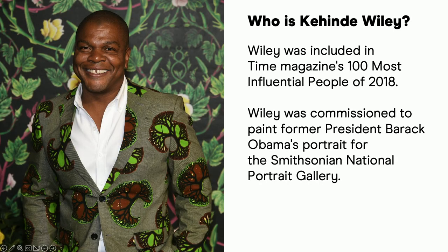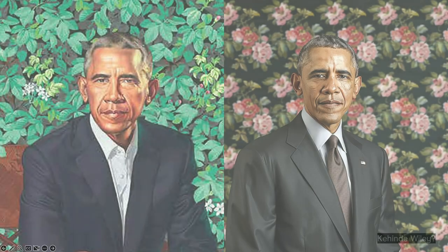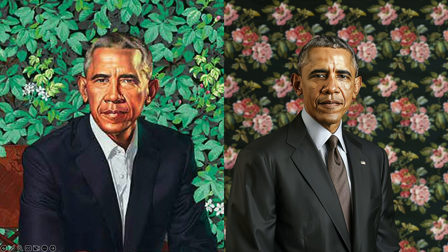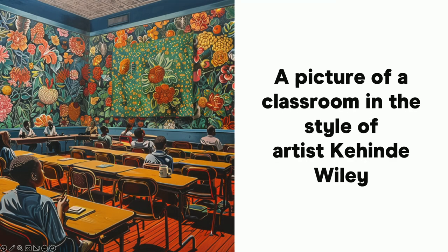This is an artist, Kehinde Wiley, who was included in Time Magazine's 100 Most Influential People of 2018. He was commissioned to paint Barack Obama's portrait in the Smithsonian National Portrait Gallery, and it was a really big deal — it led all the newscasts. But what if somebody like me could come along and create an image just like that using AI? Can you tell which one is made with AI? I was able to take Kehinde Wiley's style and make a picture of a student in a classroom reading a chalkboard. And would he mind? I would.